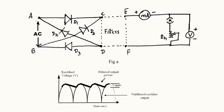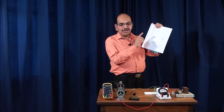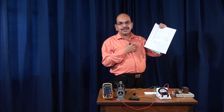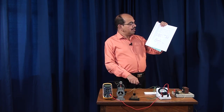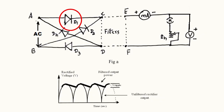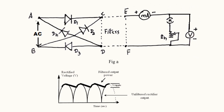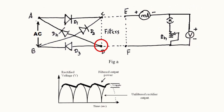This is a full wave bridge rectifier circuit wherein four junction diodes are connected in the form of a bridge. This is diode D1, diode D2, diode D3, and diode D4. The N regions of diodes D1 and D2 are connected together. The P regions of diodes D4 and D3 are connected together. This point is taken as ground, and this is the point from which we take the output. These are the two inputs to the rectifier circuit.